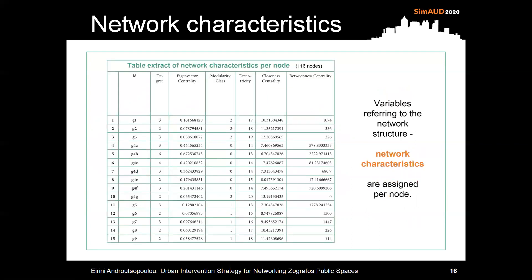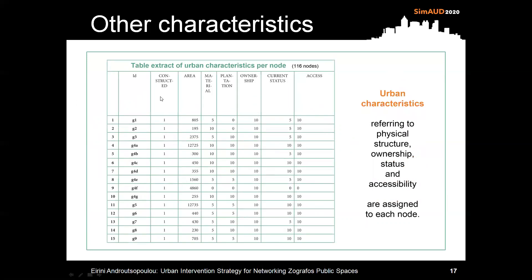To this point, network algorithms have been implemented and variables referring to the network structure are assigned per node. In addition, other characteristics referring to ownership, status, accessibility, and physical structure are assigned to each node.